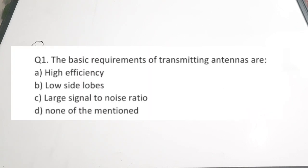The first question is: the basic requirements of transmitting antennas are — A. High efficiency, B. Low side lobes, C. Large signal to noise ratio, D. None of the mentioned. For a transmitting antenna, the basic requirement is actually high efficiency and high gain. So these are the basic requirements of a transmitting antenna.